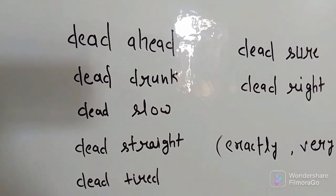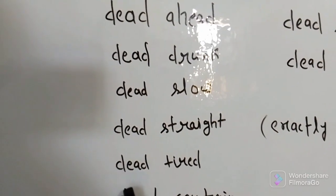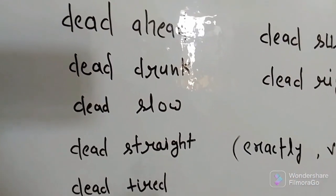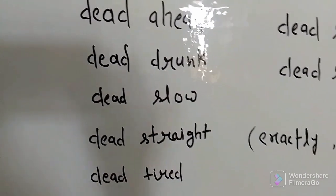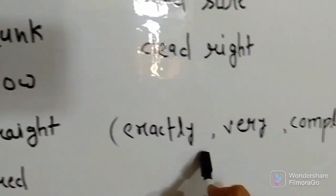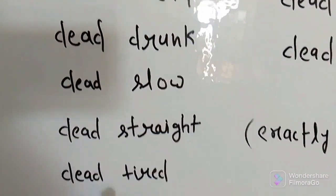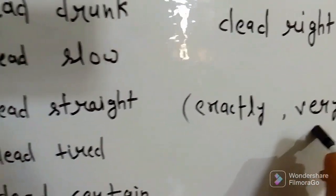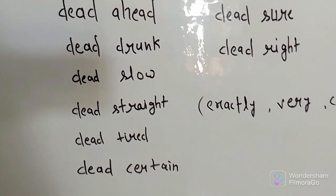Everyone must have heard words like: dead ahead, dead drunk, dead slow, dead straight, dead tired, dead certain, dead sure, dead right. I'm going to explain each and every word in detail with examples. So what does 'dead' mean here? In each sentence it means 'exactly,' 'very,' or 'completely.' For example, 'dead tired' means completely tired; 'dead slow' means very slow; 'dead straight' means exactly straight.